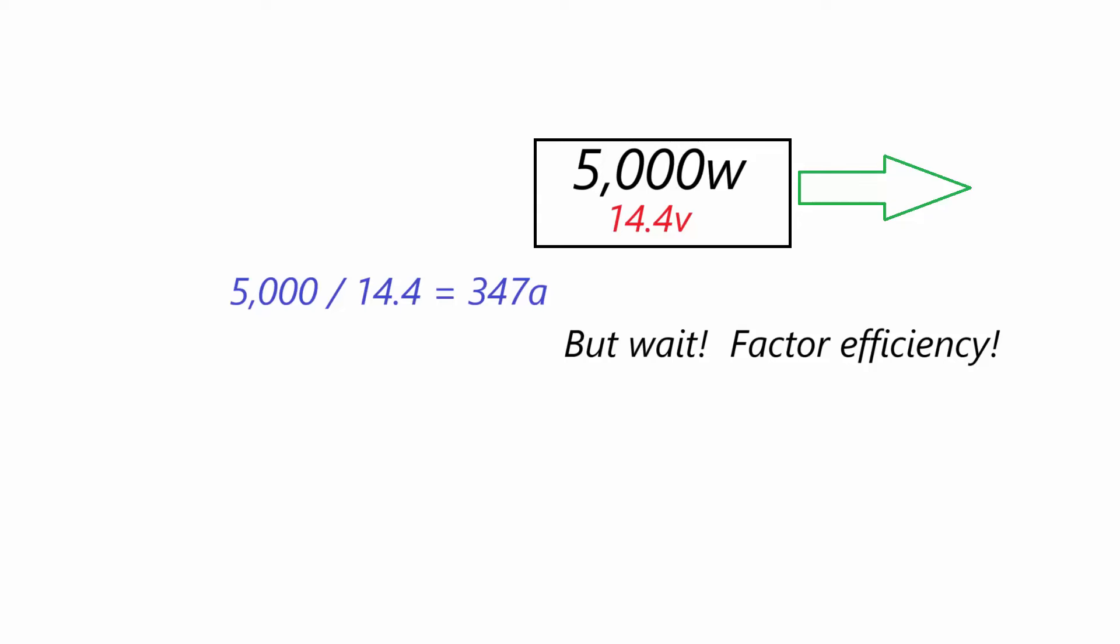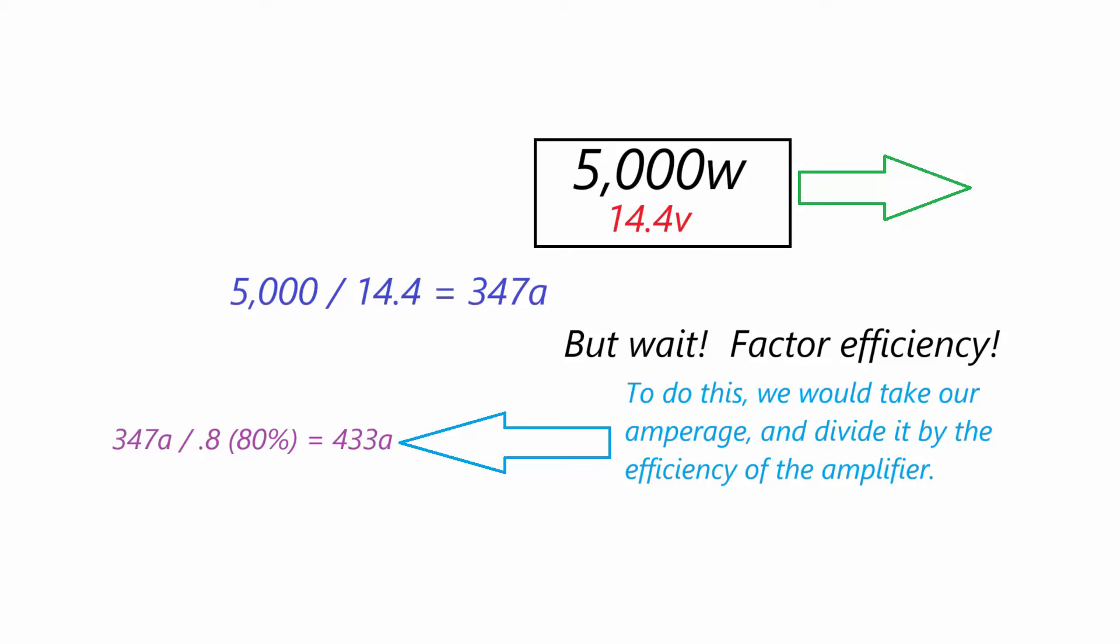This is when it's important to factor for efficiency. So in this example, let's assume that our amplifier is 80% efficient. We're going to take the 347 amps that we got from our previous calculation and then we're going to divide it by 0.8 which represents the 80% efficiency and we're going to get the total amperage requirement of 433 amps as seen here.